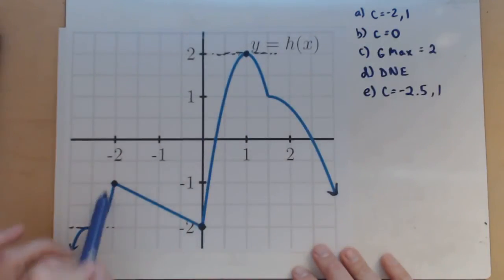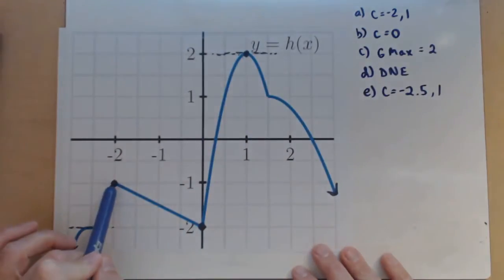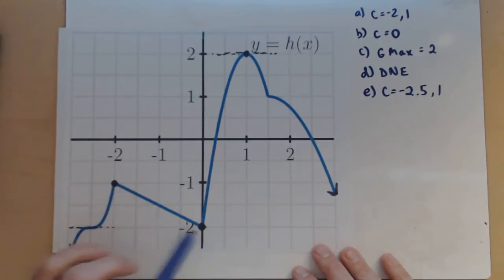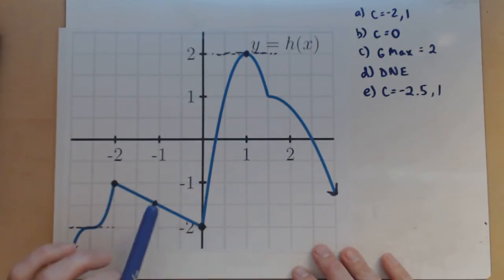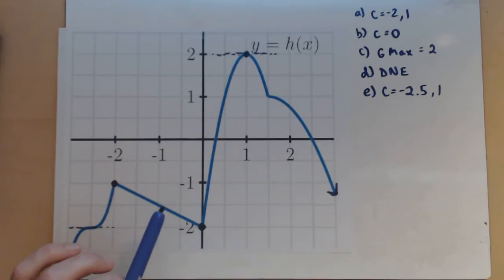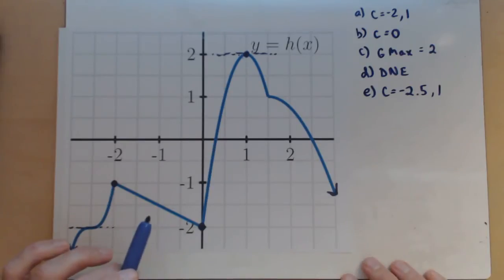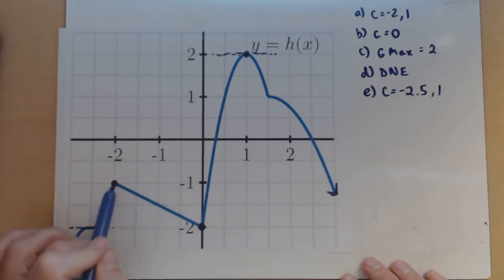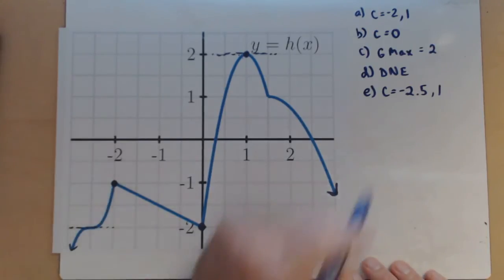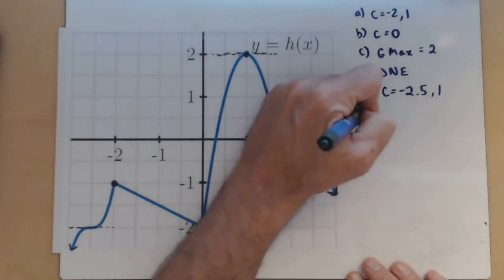Now, we might think: well, we had a local max and a local min here as well. But the derivative is not actually 0 at those points. At those points, we actually have places where the derivative does not exist, because we have corner points. So that takes us to our next question.